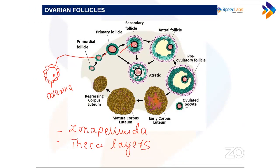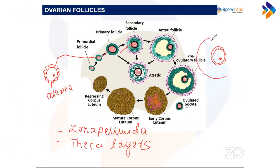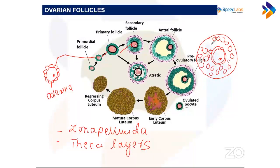The granulosa cells migrate to one side, leaving a fluid-filled cavity called the antrum. In successive stages this antrum widens. You can see in the diagram the heart-shaped empty structure representing the antrum — a fluid-filled cavity that develops as the follicle matures.